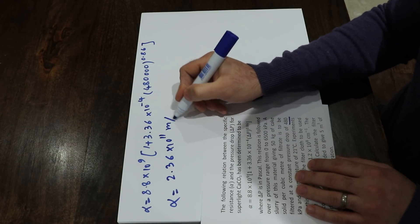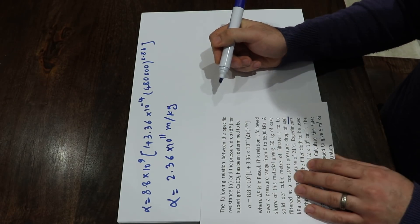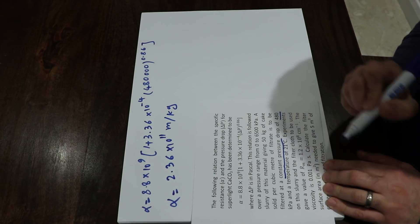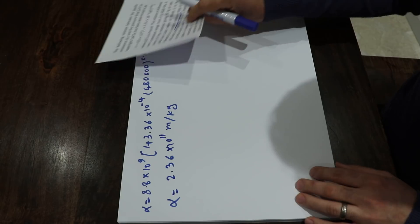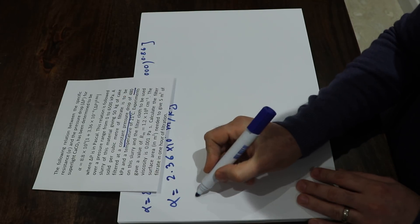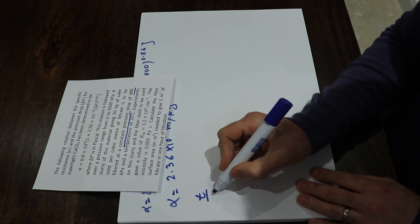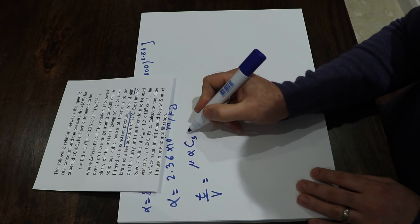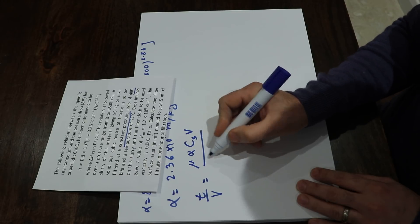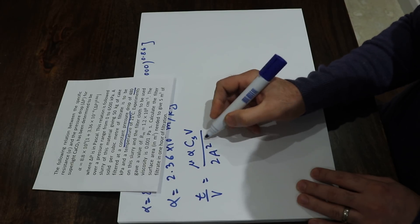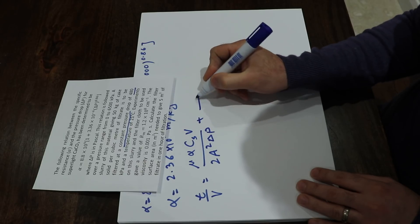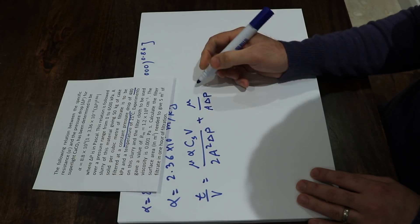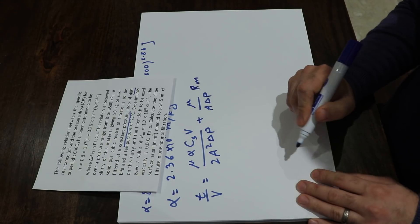And this is the filtration under constant pressure drop condition. For that you have an equation: T divided by V equals mu alpha C_S V divided by 2 a squared delta P plus mu divided by a delta P times R_M.